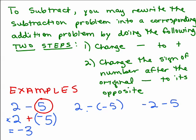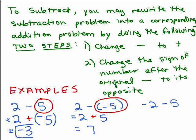Here's another one: 2 minus negative 5. You change the minus sign to a plus, and then take what's after the minus sign — this time it's negative 5 — and change that to its opposite, which is positive 5. So we have 2 plus 5. That's regular addition with whole numbers, so the answer is 7. The first example gave us negative 3, and this one gives us 7.